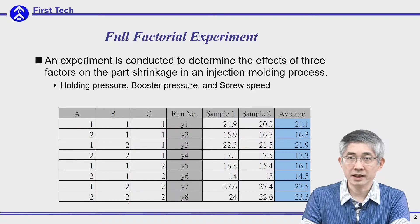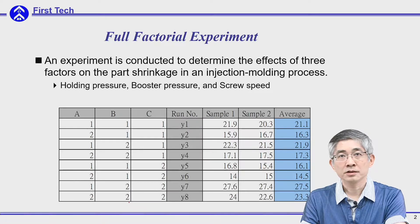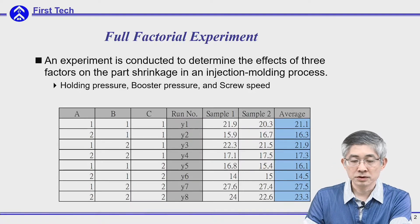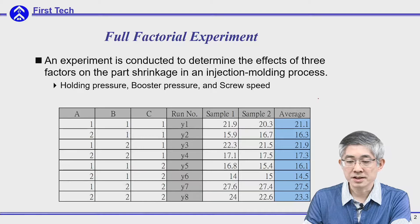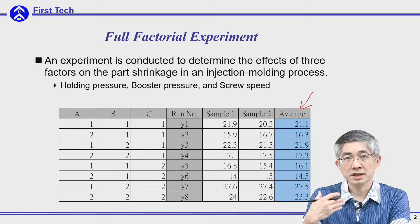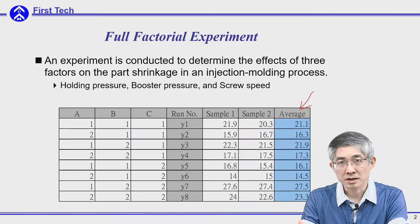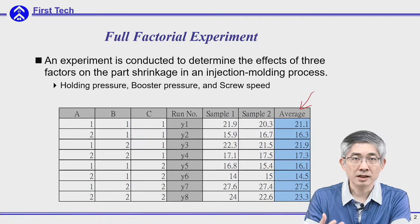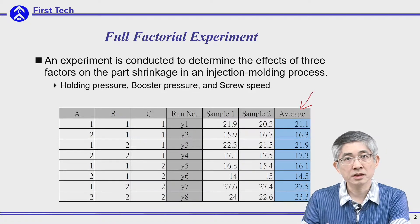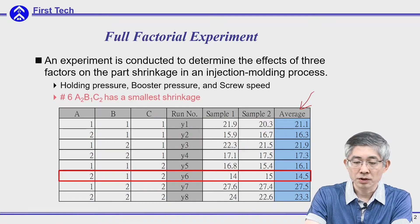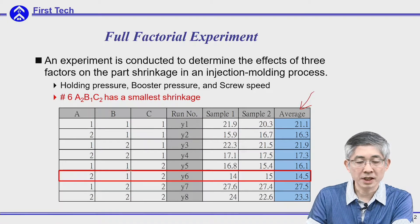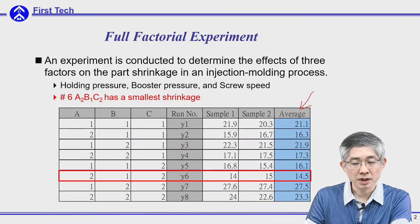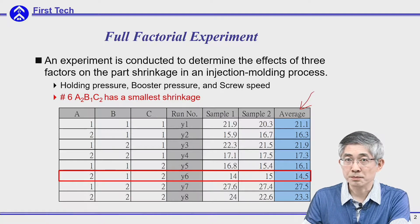In a full factorial, you can run samples. This is the sample result and this is the average shrinkage. Before doing analysis of mean, we can simply select the best combination from the full factorial, which is number six — the combination 2, 1, 2 — because the shrinkage is minimized.